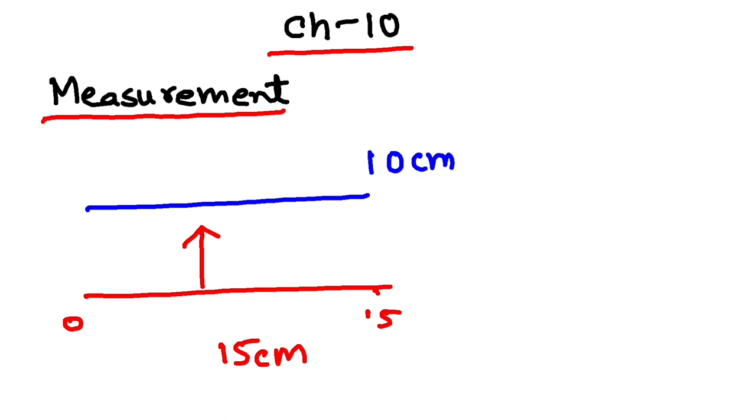What you have done: this scale is a known quantity, isn't it? Total how much? 15 centimeter. This is an unknown quantity. So comparing an unknown quantity with the help of a known quantity is called measurement.